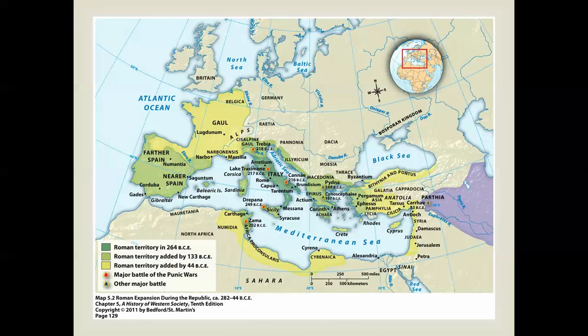Enslavement of conquered peoples in the ancient world was very common — the Mesopotamians did it, the Egyptians did it — but the numbers of slaves created by Roman conquest was very considerable. There was a very large slave population available.